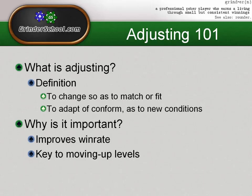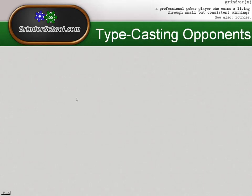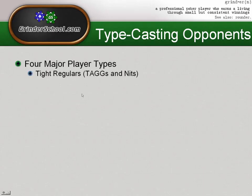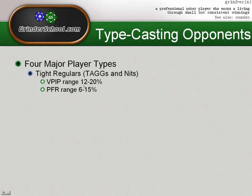The first thing we have to do is typecast our opponents. For this video I'm going to list four major opponent types. The first is your tighter regulars — tags or nits, lumped into one group. A tag or nit has a VPIP range of 12 to 20%. VPIP stands for voluntarily put money into the pot. A player playing 12 to 20% of hands at 6-max is quite tight pre-flop, with a pre-flop raising range of 6 to 15%. Someone running 20-15 is probably on the very good side of a winning tag regular.